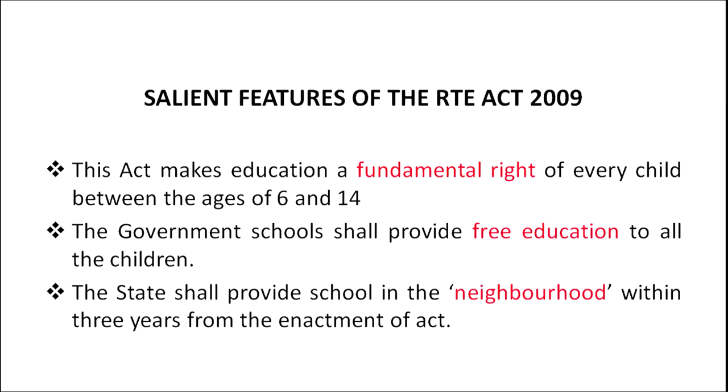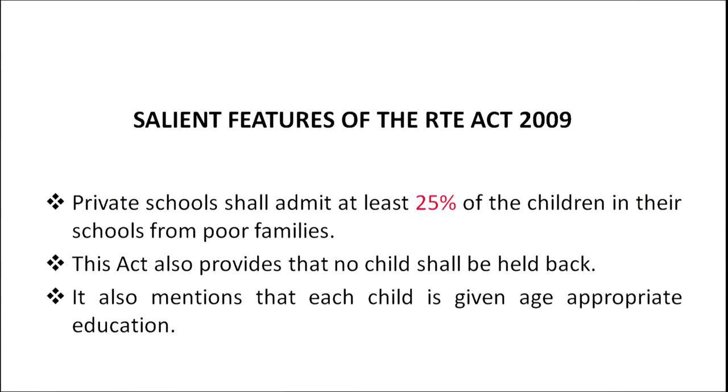The state shall provide a school in the neighborhood within three years from the enactment of this act. For easy access, if it is a primary school, it should be within one kilometer; if it is an upper primary school, within three kilometers. Private schools shall admit at least 25% of children from poor families. This is most important — everybody aspires to put their wards in private schools, and this provision ensures that even children from marginalized groups can get admitted to private schools.